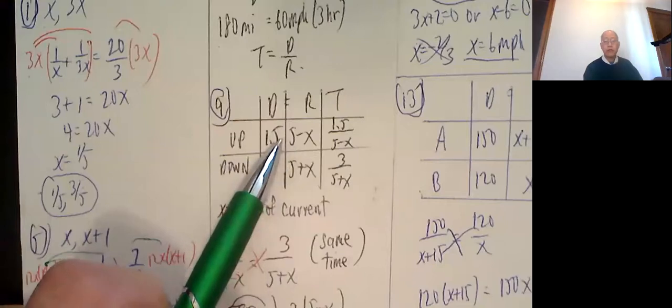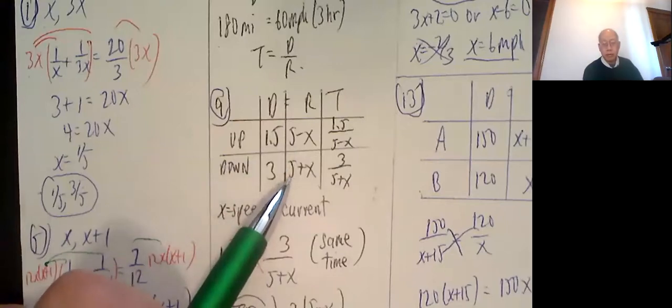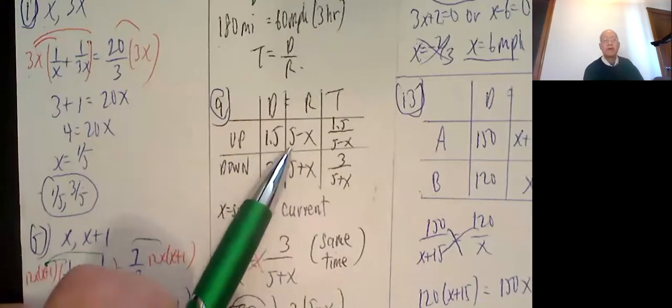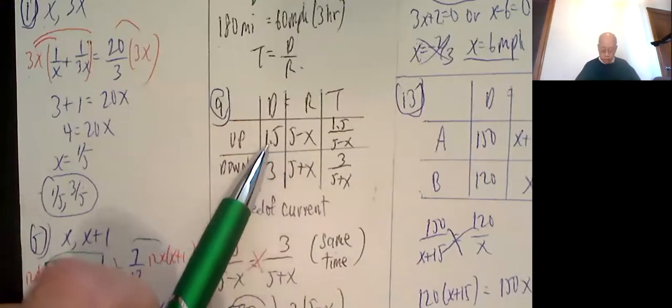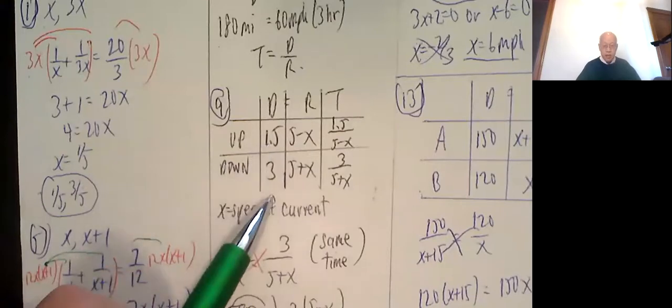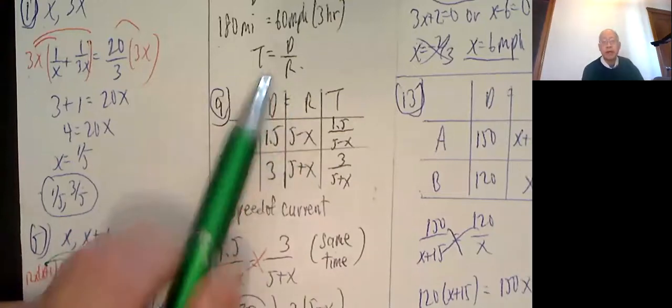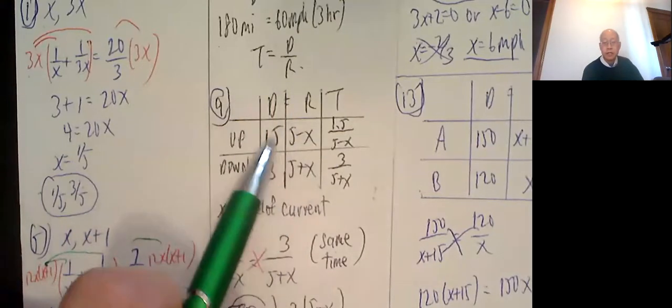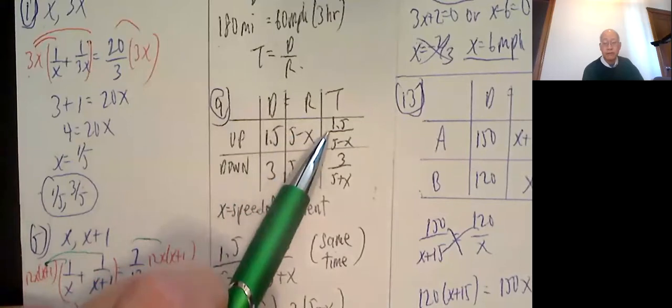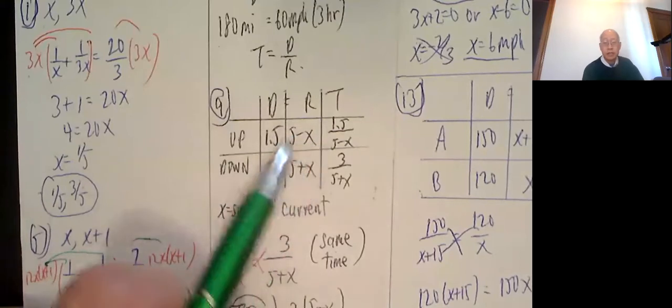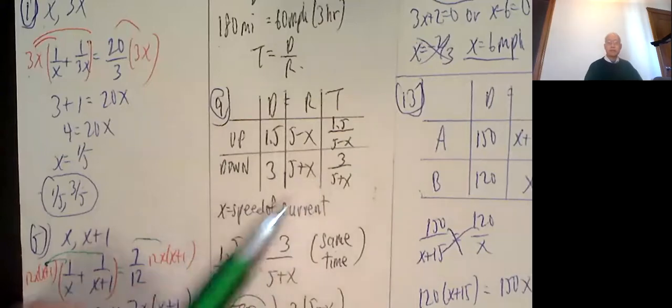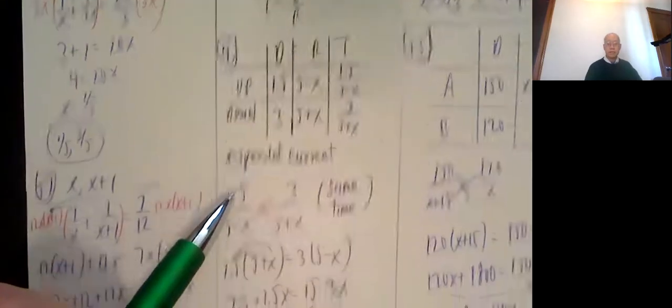So if I'm going with the current, I'm being helped by the current, 5 plus x. I'm going against the current, 5 minus x. And then the distance, it says upstream was 1.5 miles, and downstream was 3 miles. Now time is distance divided by rate, so distance divided by rate, 1.5 over 5 minus x. Distance divided by rate is 3 over 5 plus x, where x is the speed of the current.